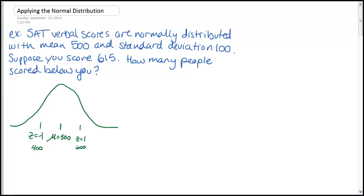So suppose you score 615. So we're looking at a data value of 615, and we typically use an x to represent data values. We want to know how many people scored below you. So if we mark this on our picture here, 615 is a little more than one standard deviation above. We want to know how many people scored below you.